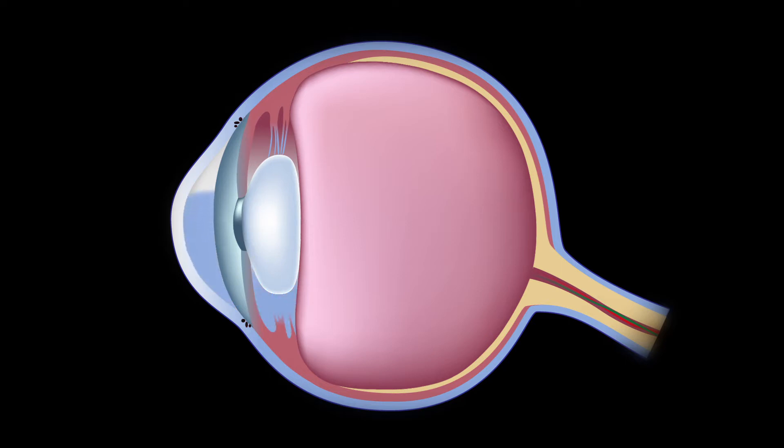That pressure gets transmitted to the inside of the eye, applied to the nerve leaving the eye, and the neurons in that nerve begin to die over time.